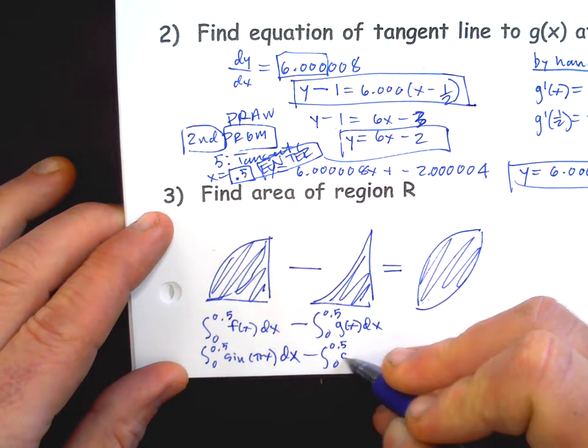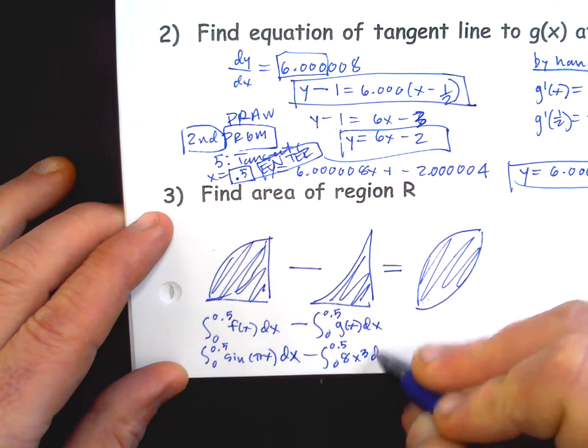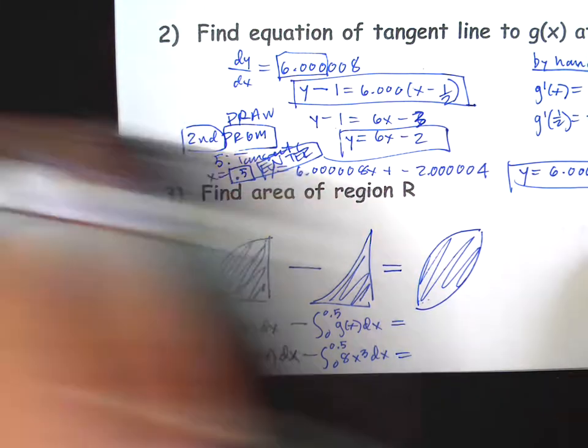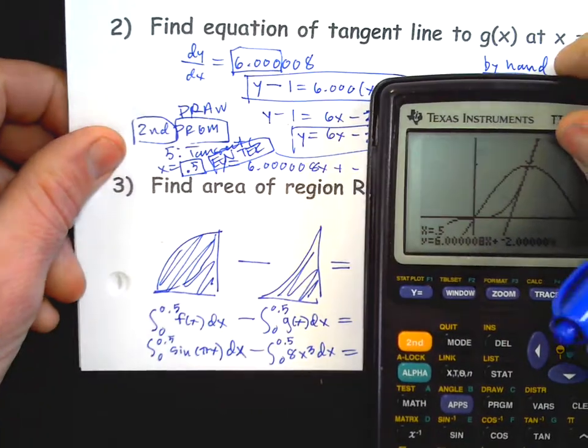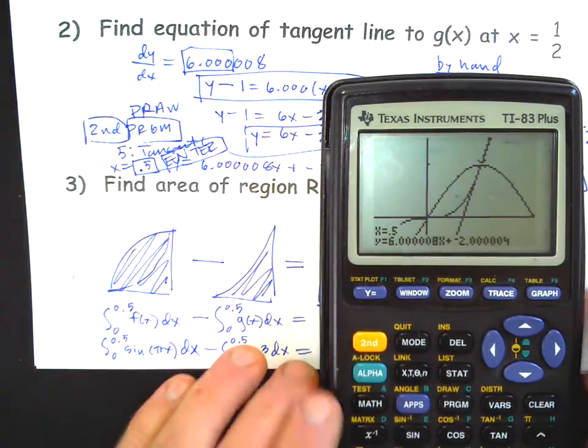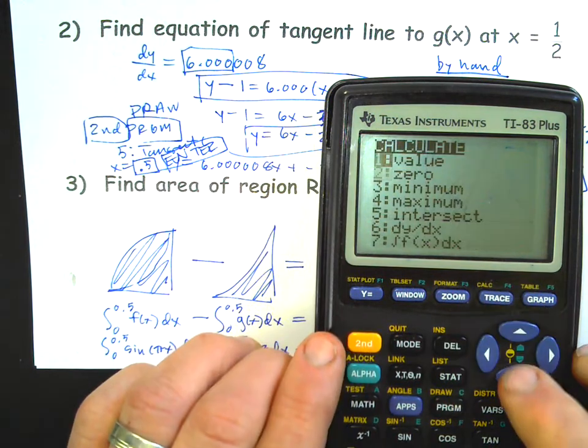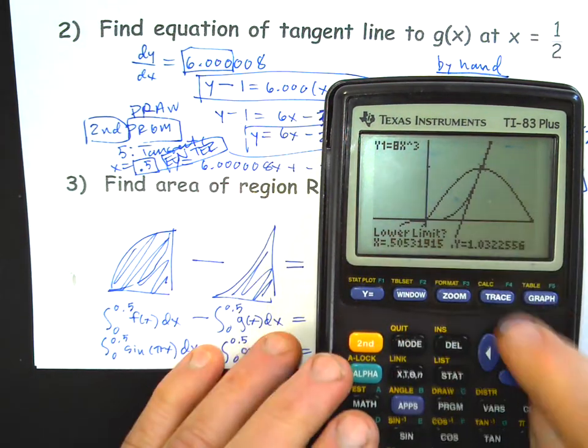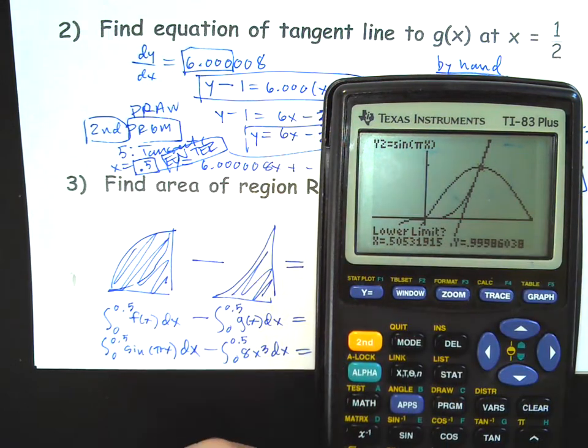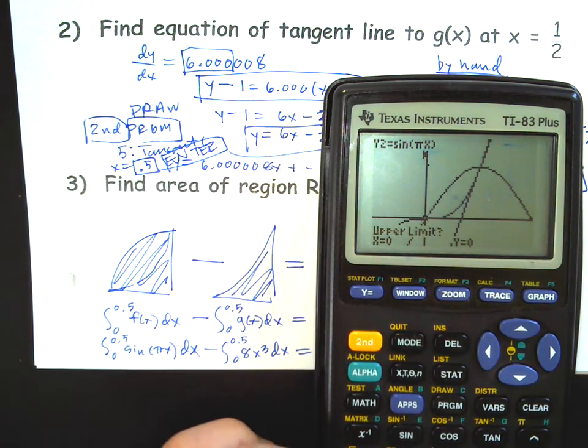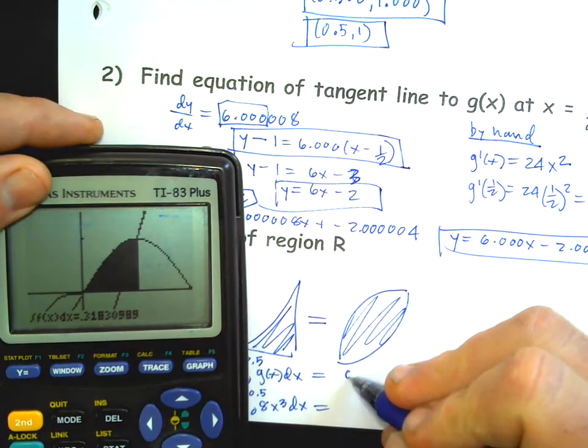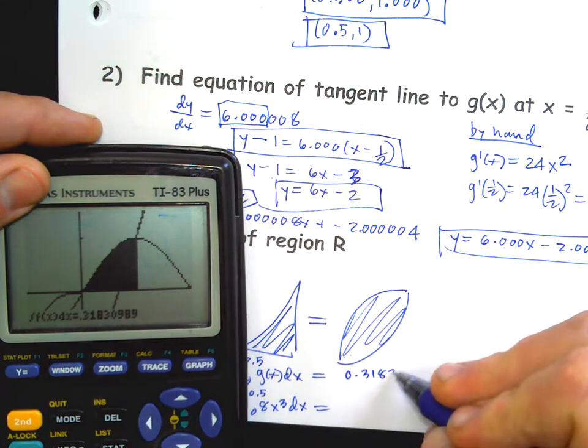So that's my strategy, that's my setup. Now you could do these on the home screen here but you have to do one at a time. Second calc number seven. You got to tell it which function, zero to 0.5. And it shades it in and it gives you the answer is 0.318309. Now before you're done carry more than three decimals.